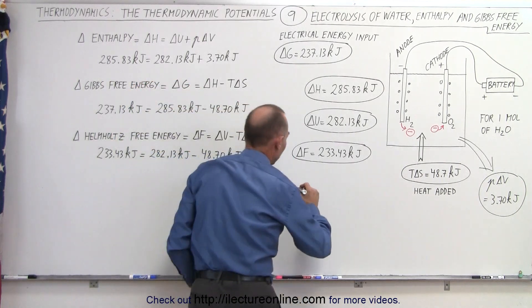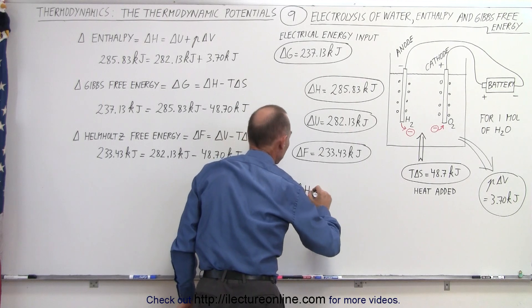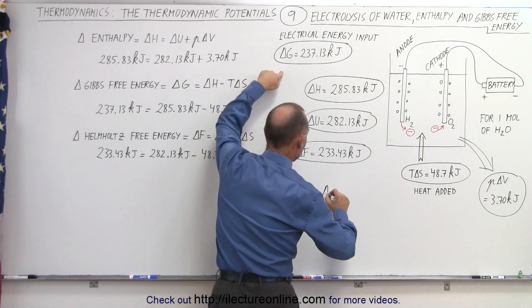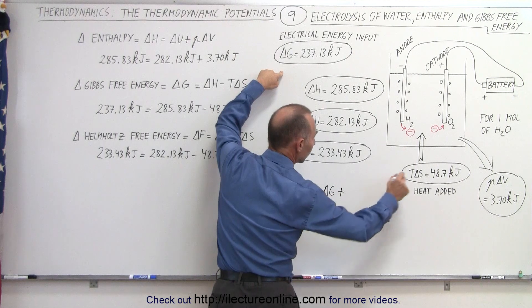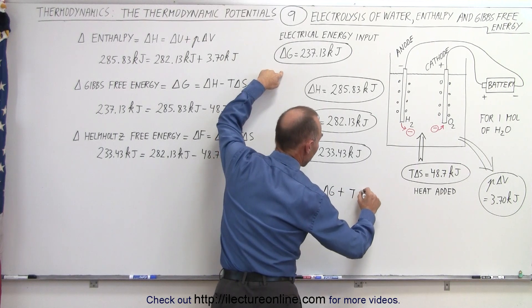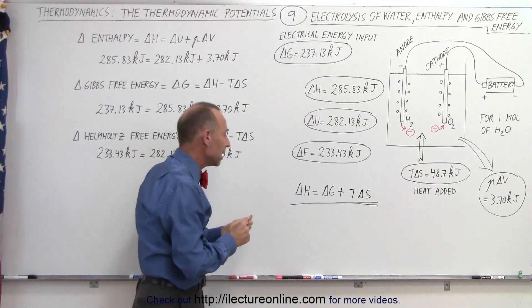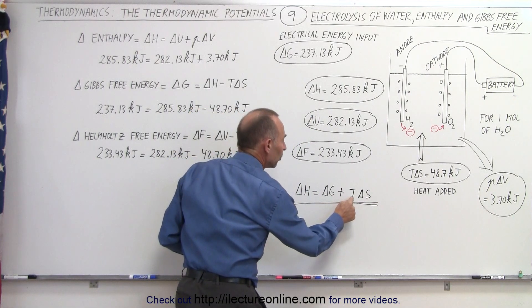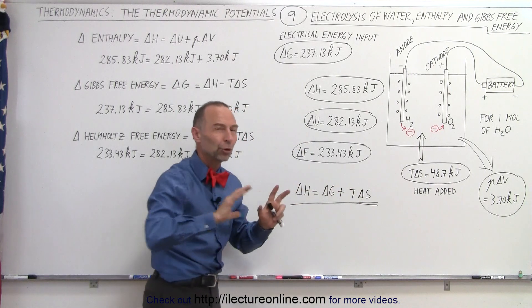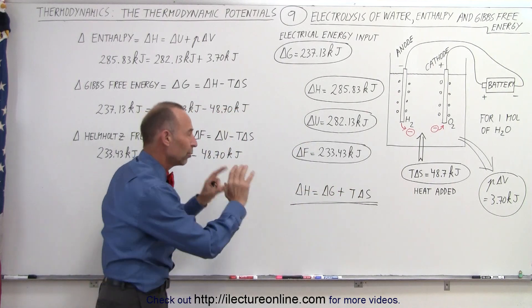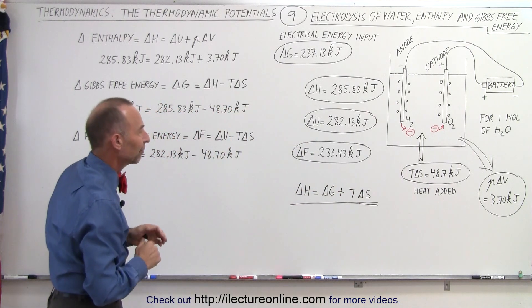So another way to write that is that delta H is equal to delta G plus T times delta S. So there's another way of looking at the enthalpy. It is the Gibbs free energy added to the term T delta S. And again, we don't know yet what that means. Patience, we'll explain what that means in the next several videos.